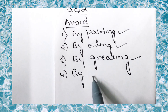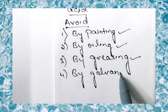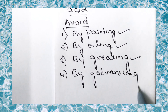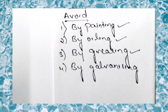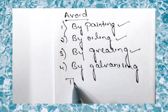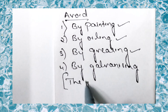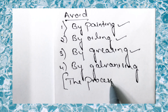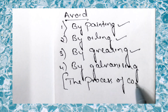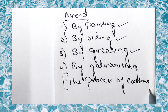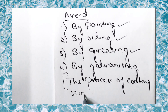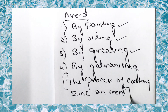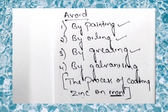A fourth method is galvanizing. Galvanizing is the process of coating zinc on iron. Zinc is more reactive than iron, so zinc is deposited on the surface of iron to avoid corrosion.